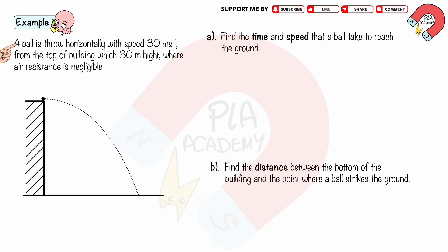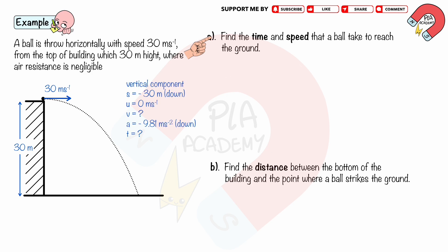For example, a ball is thrown horizontally with speed 30 meters per second from the top of a building 30 meters high, where air resistance is negligible. Find the time and speed for the ball to reach the ground. In the vertical component, the displacement s is negative 30 meters, the initial velocity u is zero, and the acceleration a is negative 9.81 meters per second squared. We use the equation s equals ut plus half of at squared, substituting the known values.